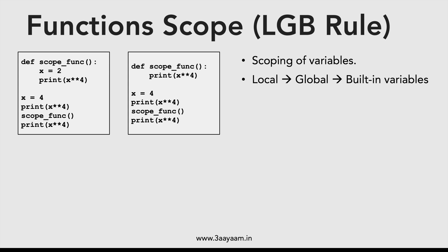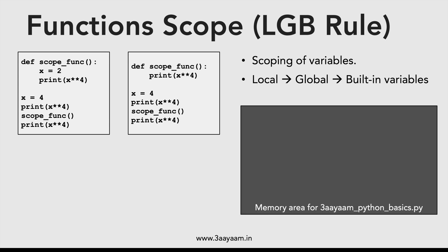Local is within the function, global is within the program. If the variable is not found in the function, it searches the entire program. If found globally, it prints that value. If not found globally either, it checks built-in variables. If not found there, it gives an error. So: first local scope is checked, then global scope, then built-in variables.